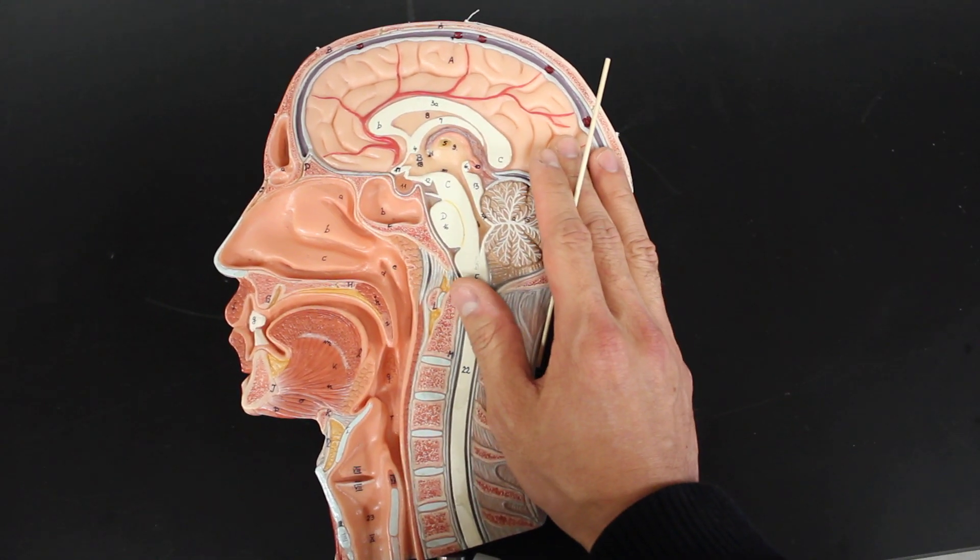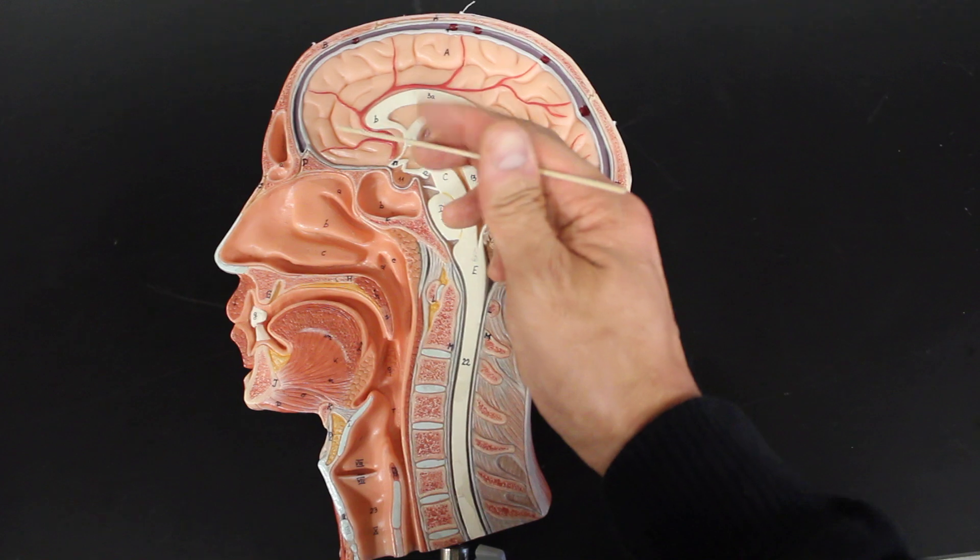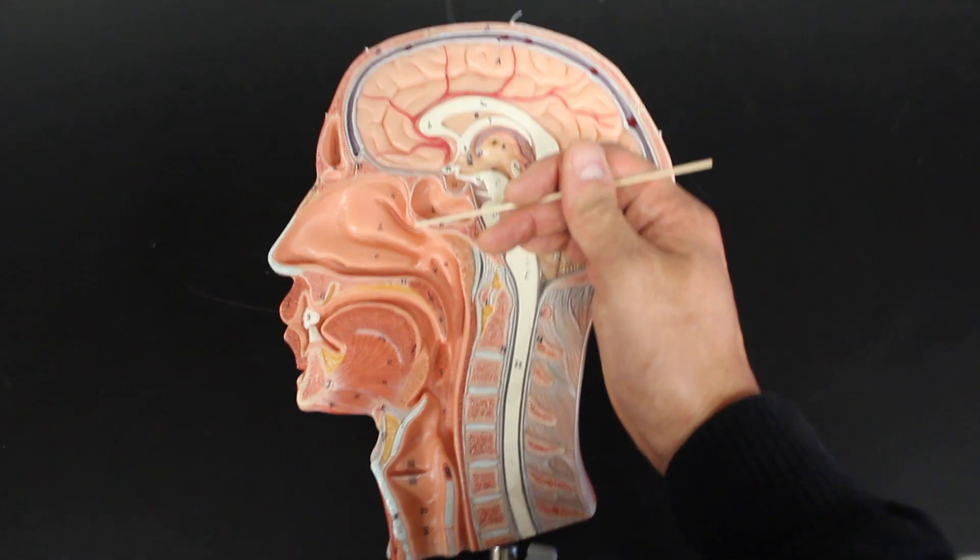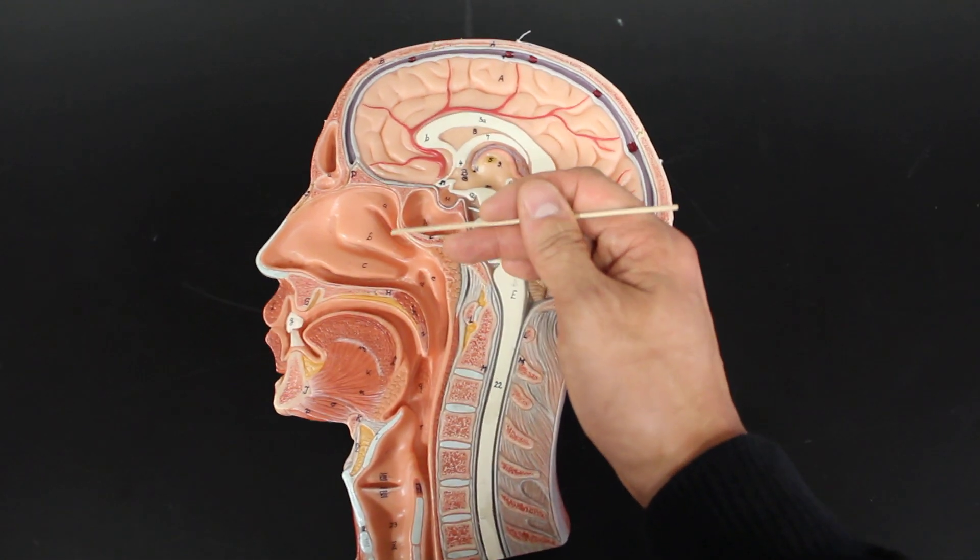Underneath each of them are called the nasal meatuses. They drain the sinuses, and that's where you'll find fluid coming in and out if you have a sinus infection or drainage.